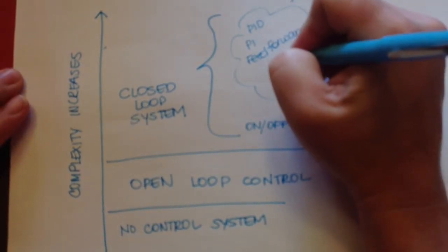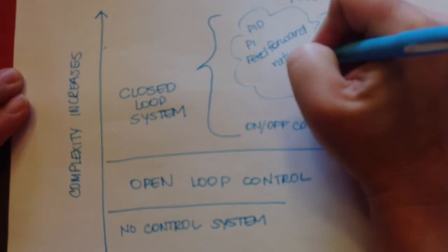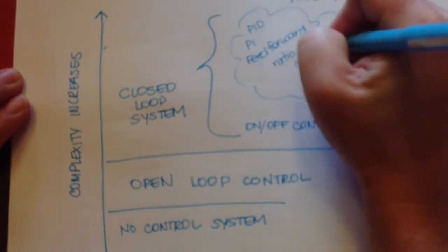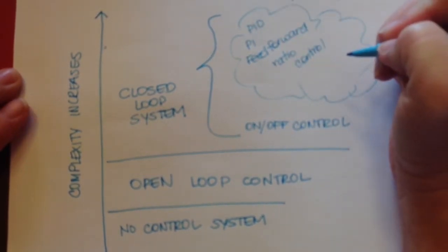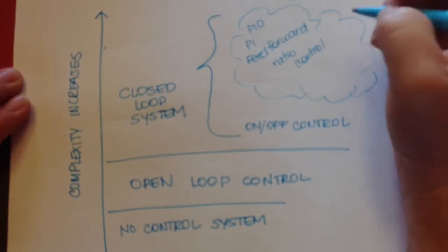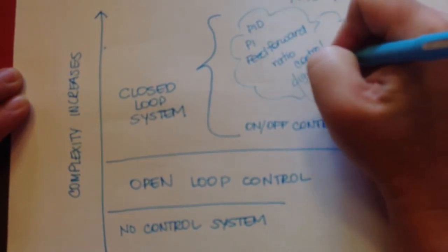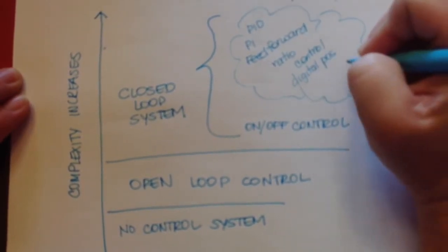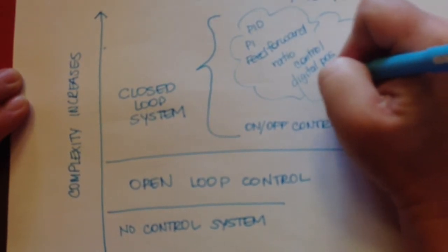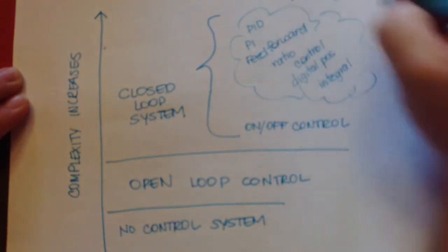We might have ratio control, we might have digital position control, we might have just integral. So there are a lot of other closed loop control systems.